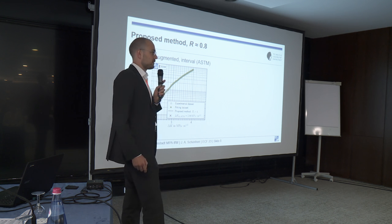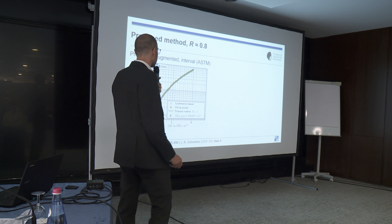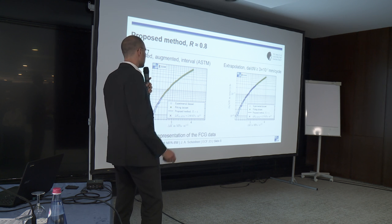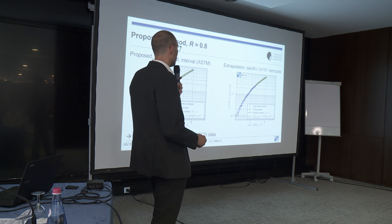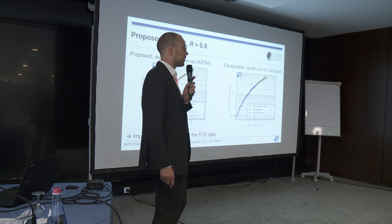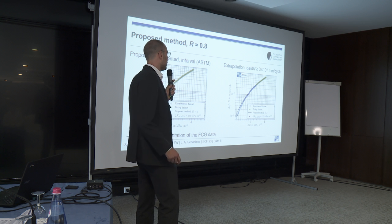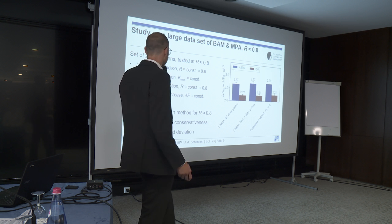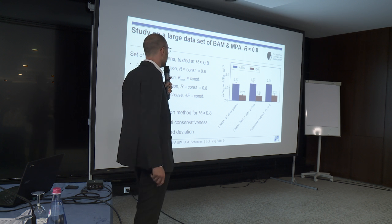Since we now have a curve rather than a straight line, we can also augment the fit interval. Using the fit interval proposed by Döker reduces the conservatism. We are also able to extrapolate data — using only a subset of data points (the green dots) to calculate the fatigue crack growth threshold according to the ASTM operational definition, we extrapolated about 50% of our data and still obtained a pretty good fit. To ensure this is a robust method, we studied a large dataset.